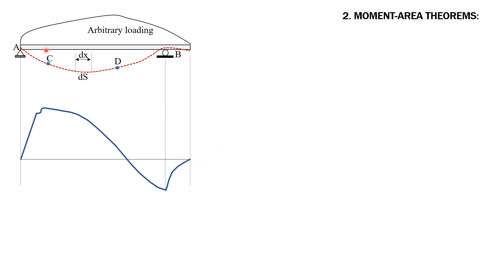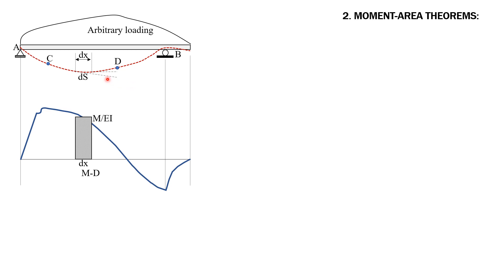We draw the typical moment diagram of the beam due to the loadings. Considering portions between C and D only, the height of this strip — which is highly exaggerated — is equal to the M over EI diagram, and the base is equal to differential DX, which is again very very small. From the left side of this differential S we draw a tangent line, and from the right also a tangent line.